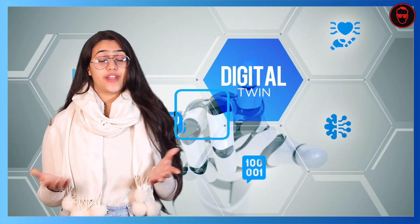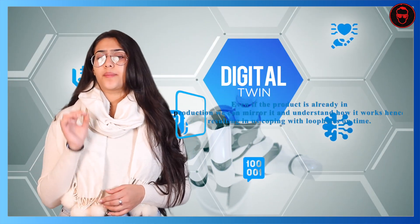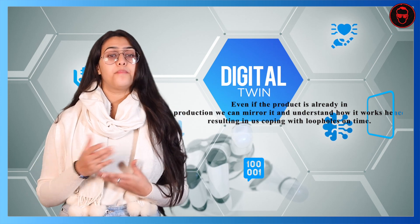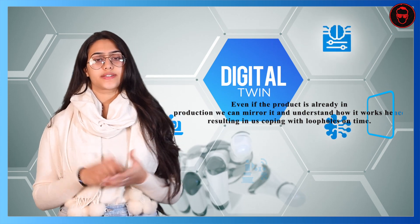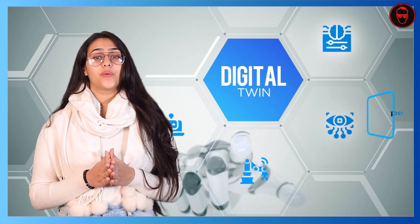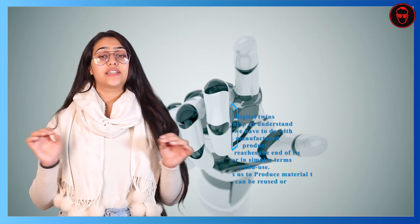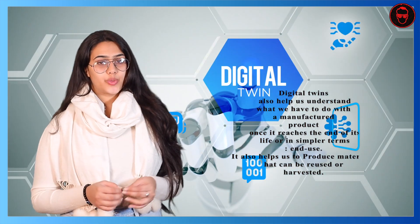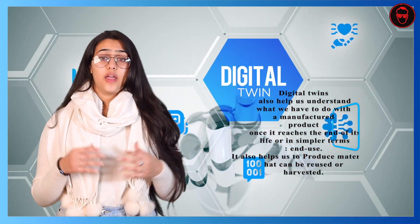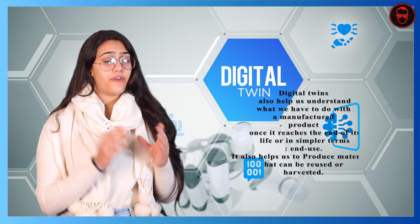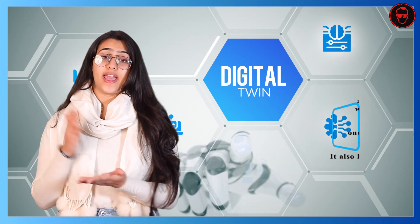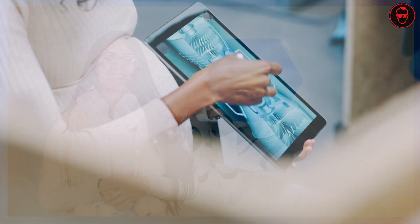Secondly, we have greater efficiency. Even if the product is already in production, we can mirror it and understand how it works, resulting in us addressing any loophole on time. Last but not the least, we have product end of life. Digital twins also help us understand what we have to do with a manufactured product once it reaches the end of its life, or in simpler terms, end use. It also helps us to produce material that can be reused or harvested.